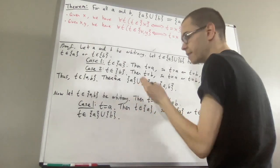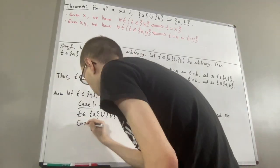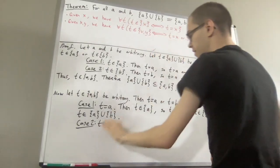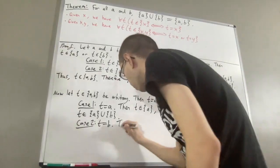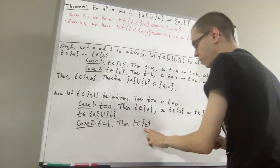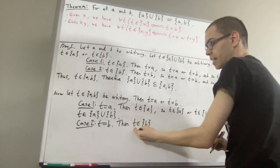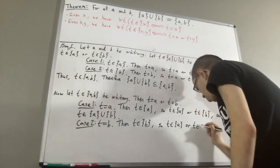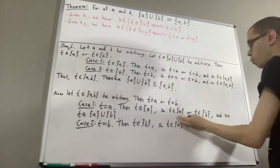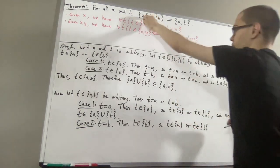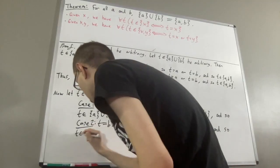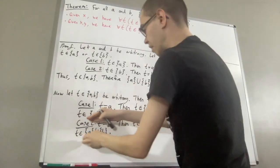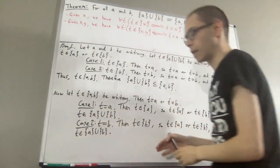Now let's move on to case two, where T is equal to B. Since T is equal to B, by the property of singleton sets, this tells us T is an element of the singleton set of B. But since T is an element of the singleton set of B, that implies T is an element of the singleton set of A or T is an element of the singleton set of B. And so we're done. So, no matter which case we have, it follows that T is an element of the union of the singleton set of A and the singleton set of B.